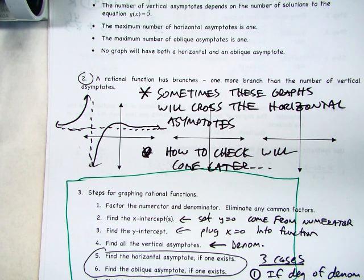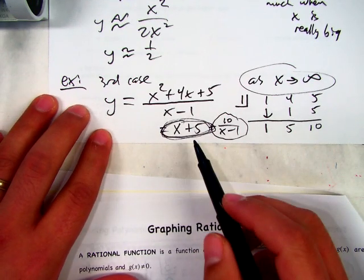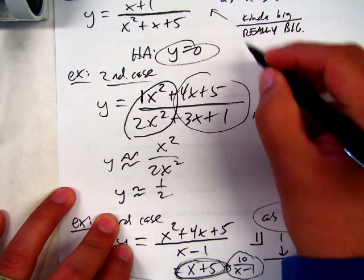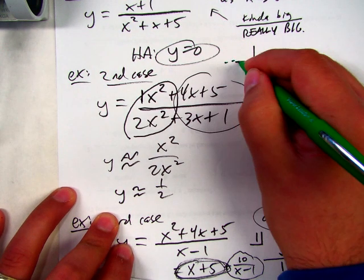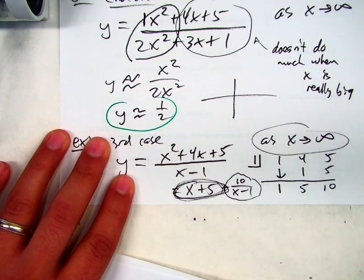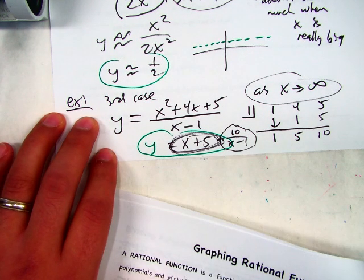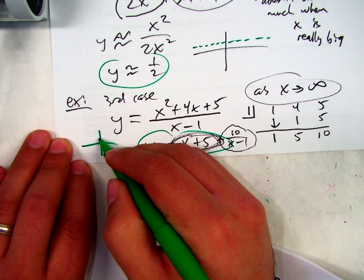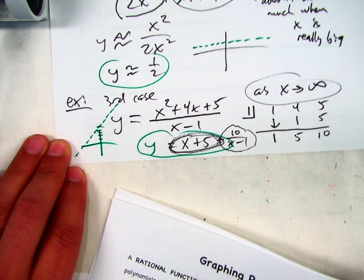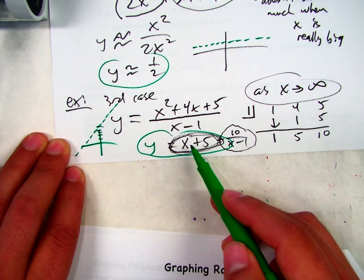Student: I still don't get what the oblique is. Teacher: The oblique asymptote? Instead of a horizontal — like here we had y equals 0 or it shifts up half a unit — here we're saying there's an asymptote but it's not horizontal. It's actually a line, like y equals x plus 5. Some people call them slant asymptotes or line asymptotes. I don't like to call them that because it could even be a quadratic, though we're not going to deal with those.